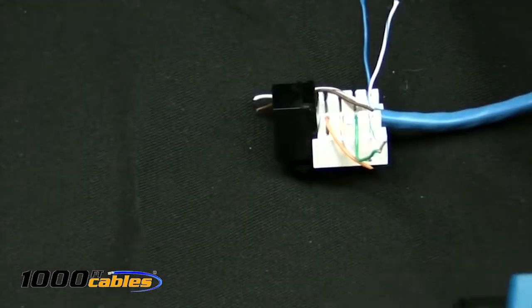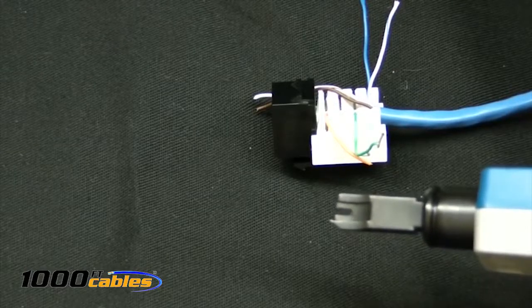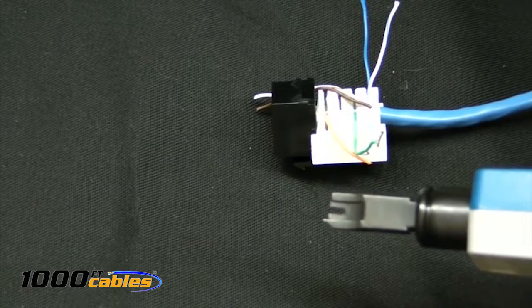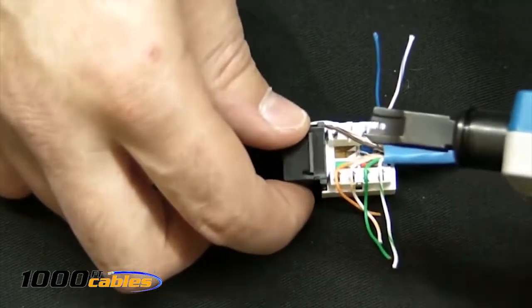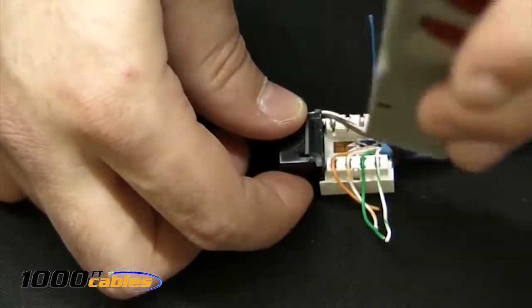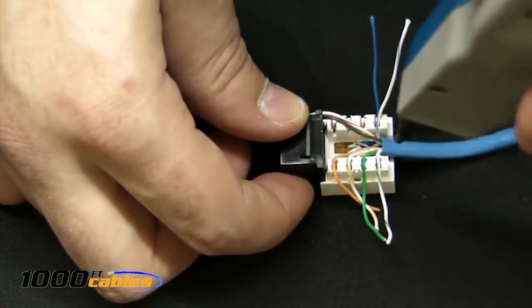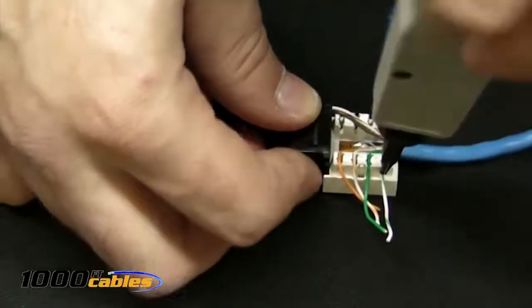Now you want to go ahead and take your punch down tool here. If you notice, there's two ends on it. There's a dull end, which is flat, and there's one with a little nub sticking out. That is a blade. That's actually going to cut our excess wire off right here. You're just going to go through the side where we placed the wires on and punch down each one individually. That's going to put the wire down into the receiver so we'll get signal, and we're going to end up cutting the ends off.